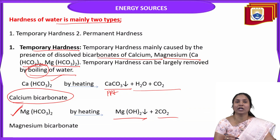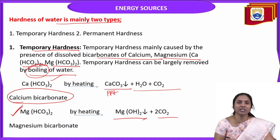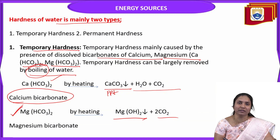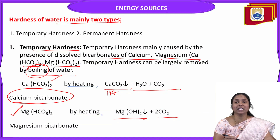So there are two types of hardness of water: temporary hardness and permanent hardness. Temporary hardness means the water contains calcium and magnesium bicarbonates, and it can easily be removed by boiling.